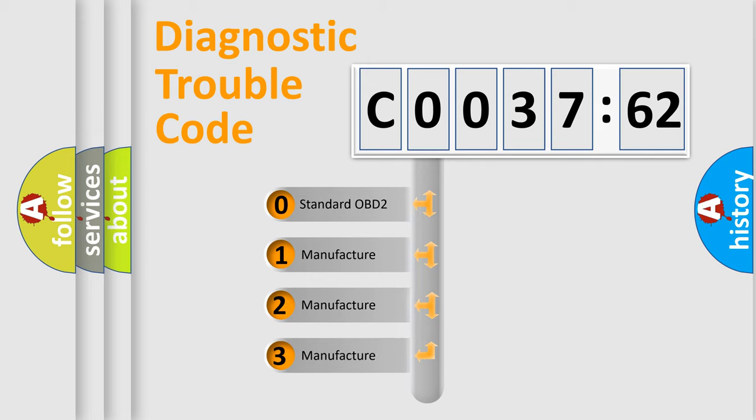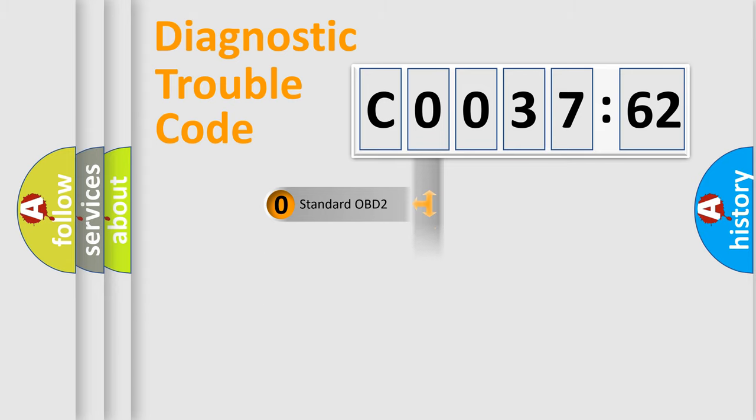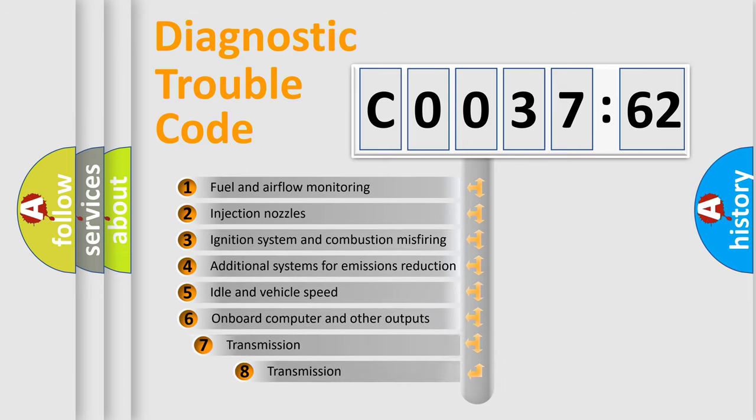If the second character is expressed as zero, it is a standardized error. In the case of numbers 1, 2, 3, it is a more prestigious expression of the car-specific error.